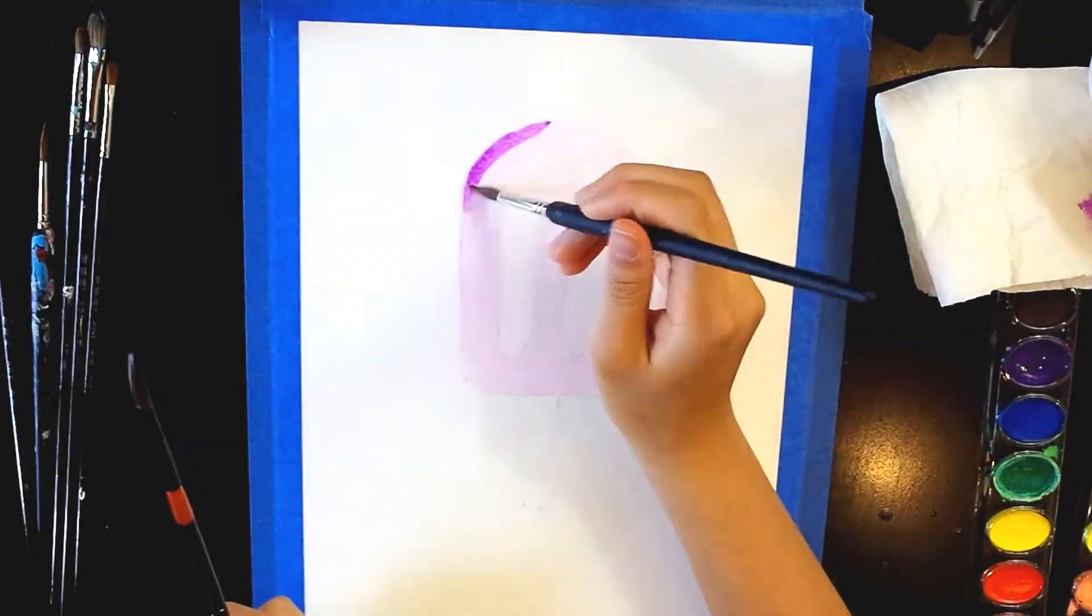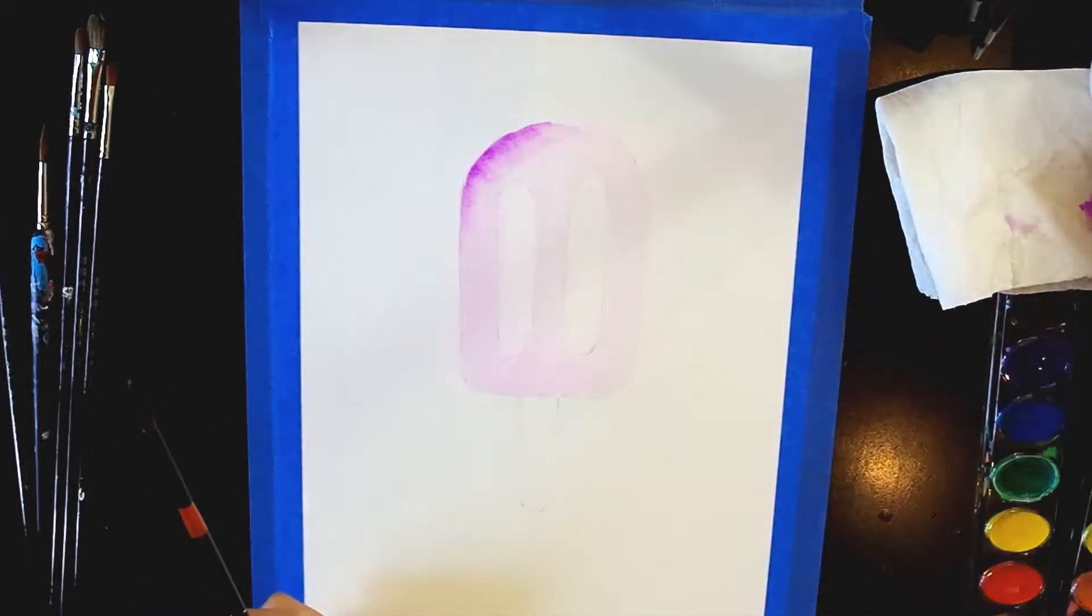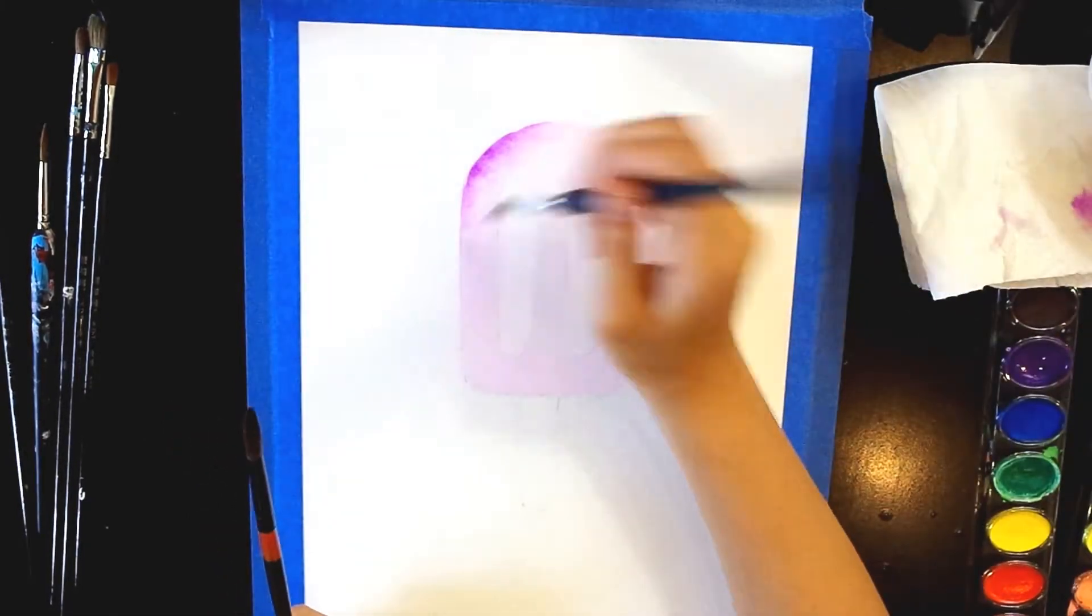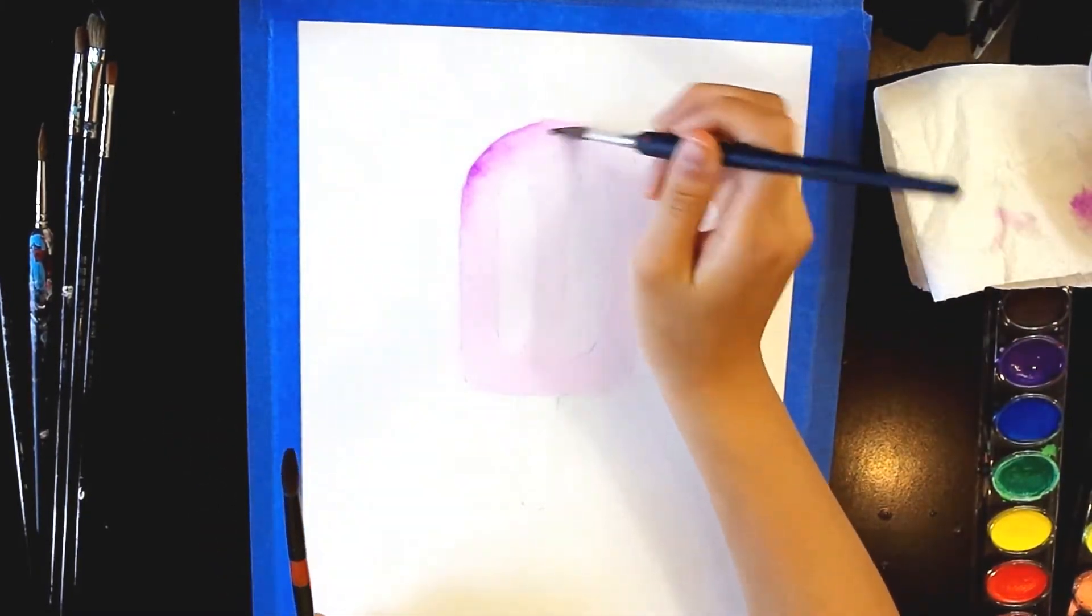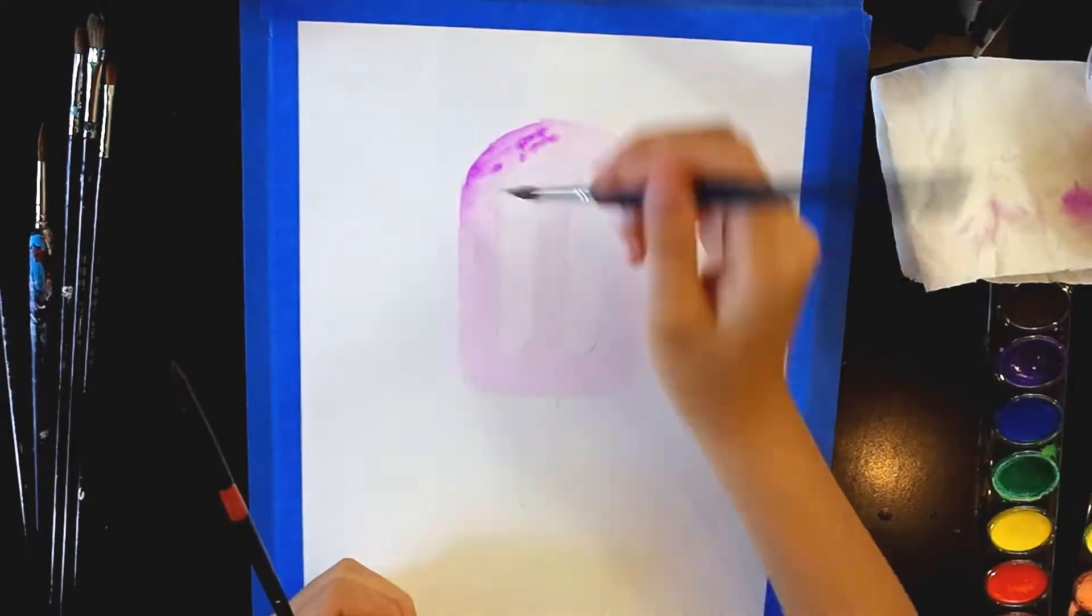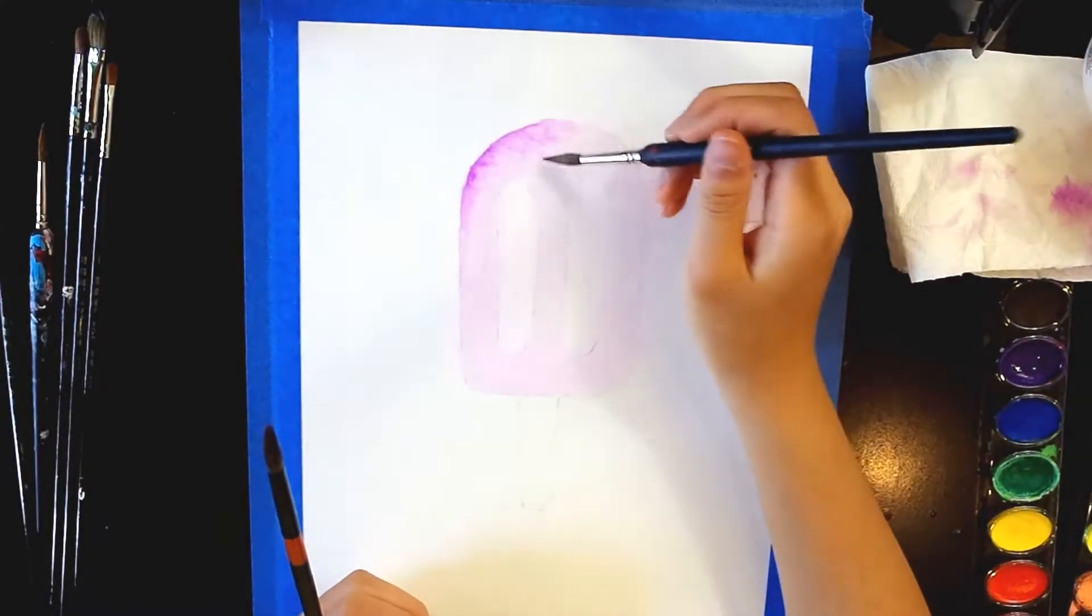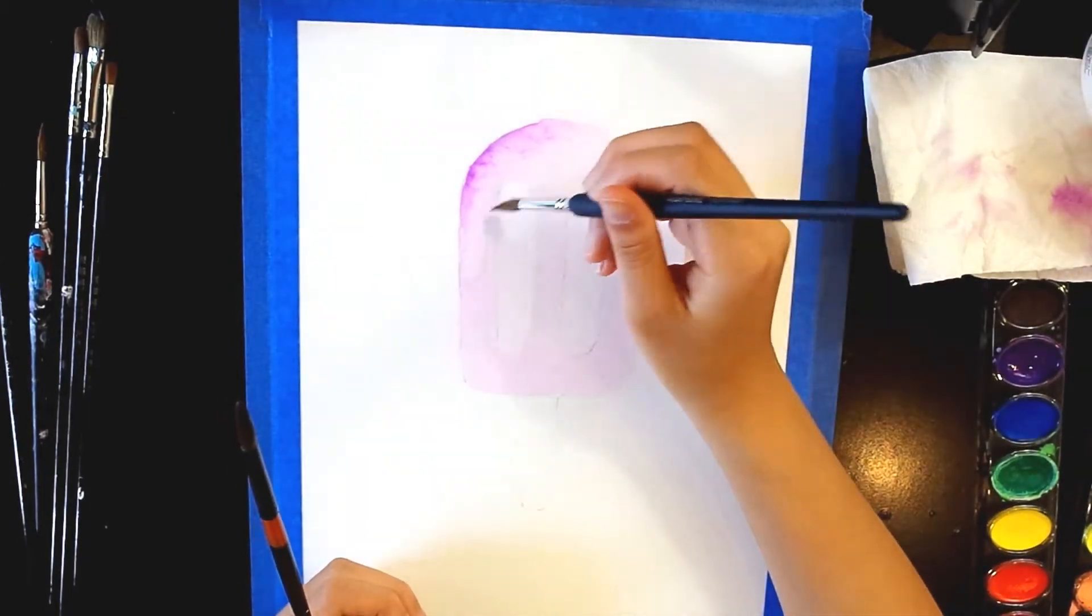Coat the whole popsicle in that color. Go in with a darker version of the color and add the shadows. This will make it dimensional. Continue adding shadows along the shadowy side of the popsicle. One side will be lighter than the other because of the light.